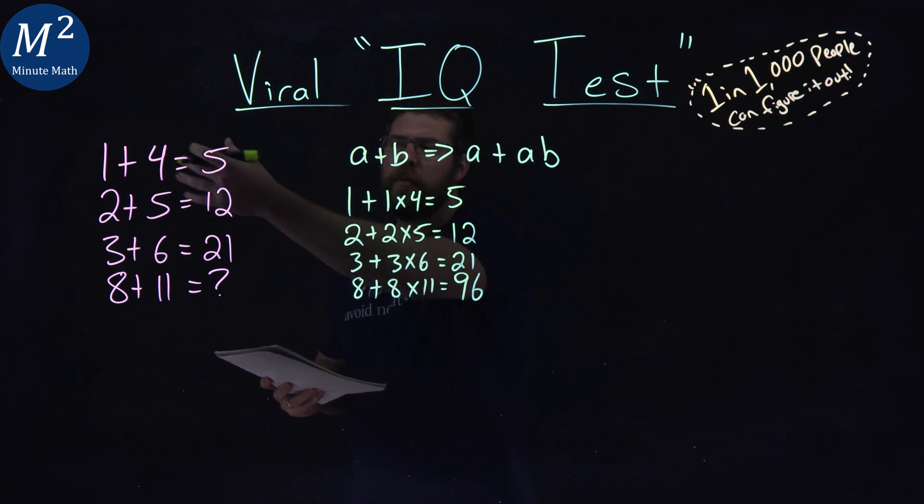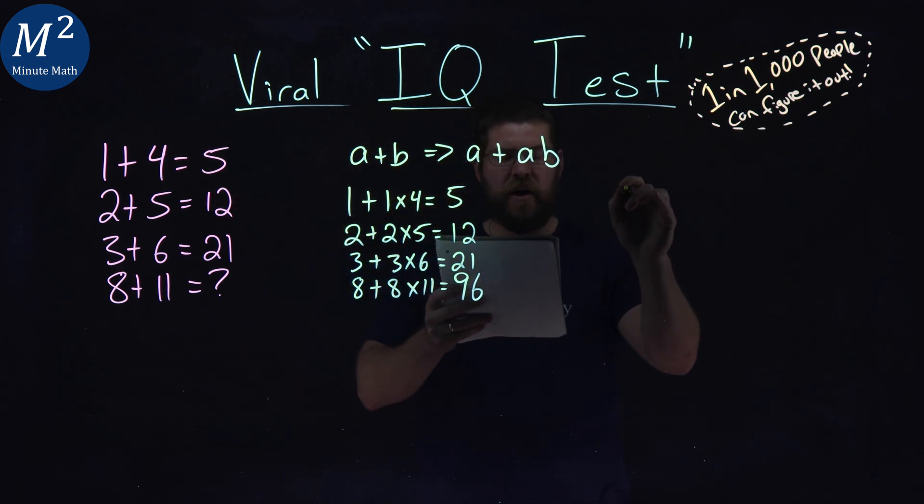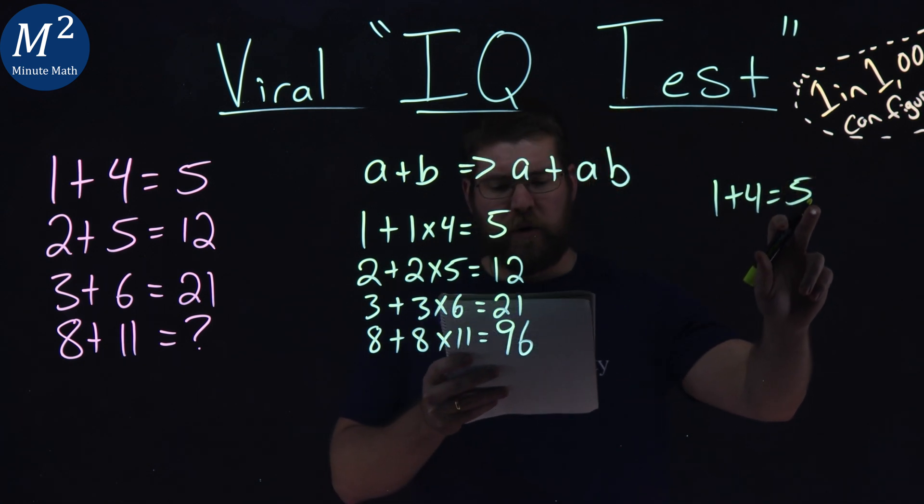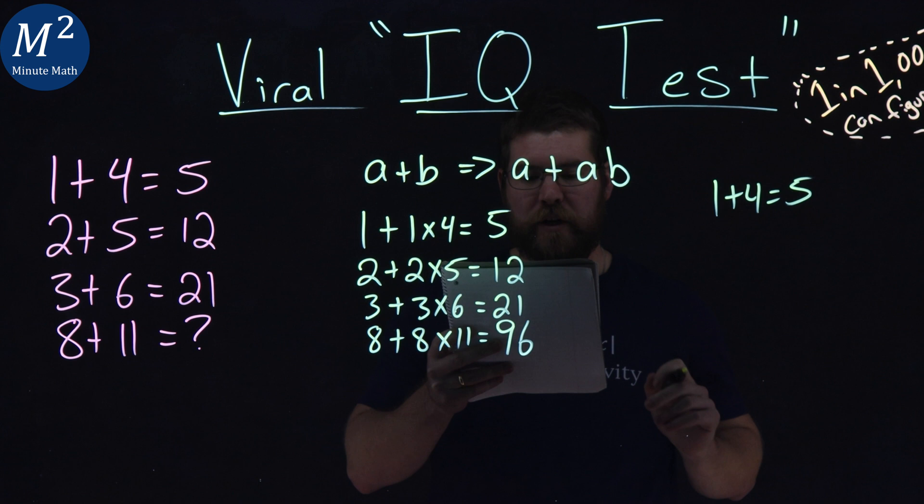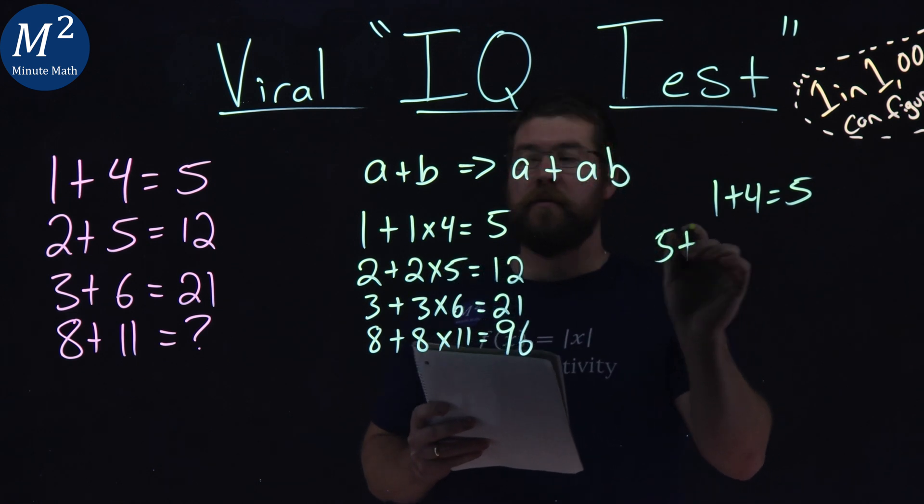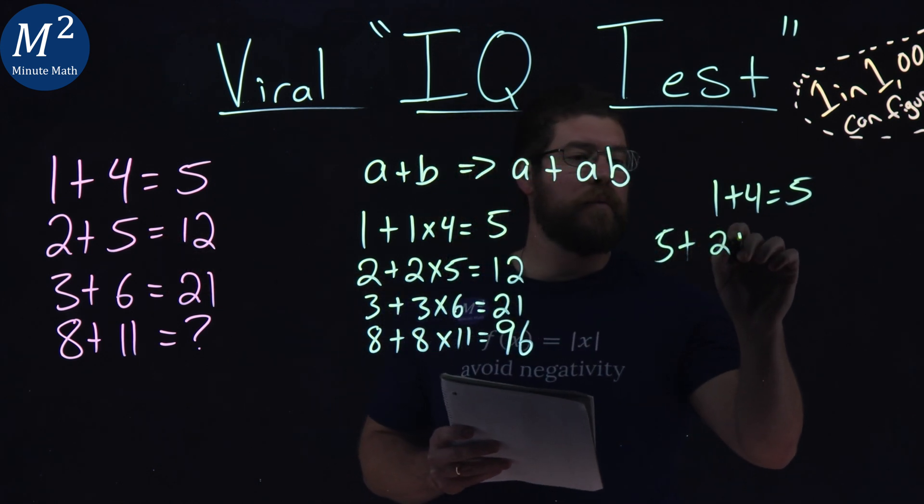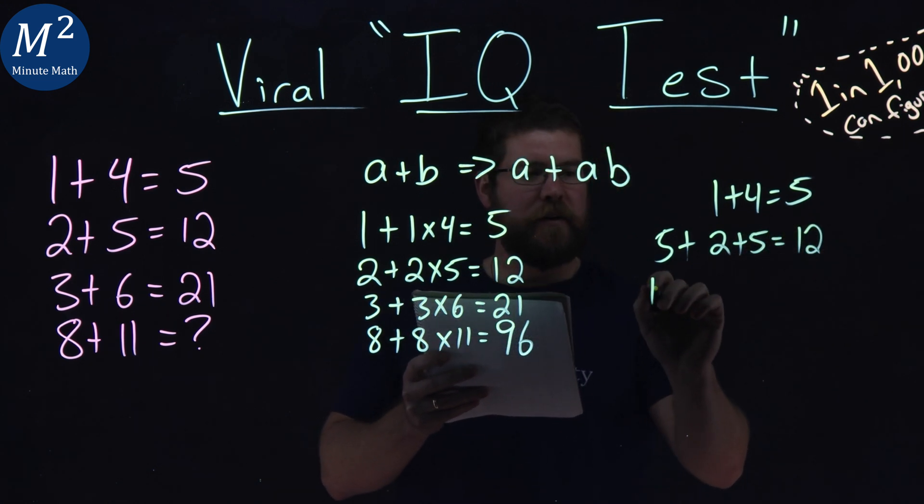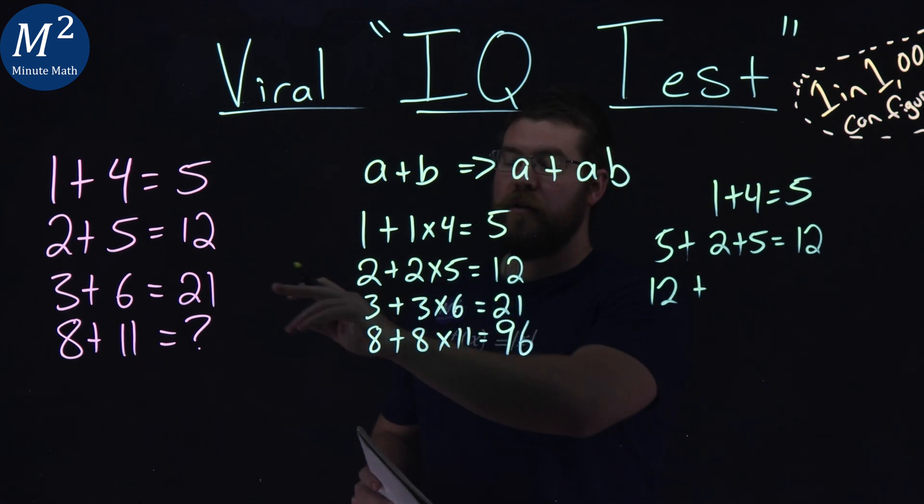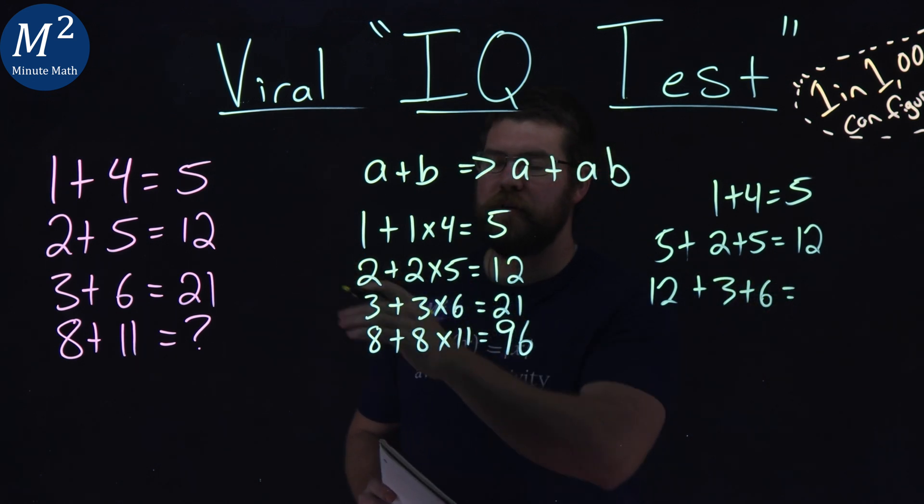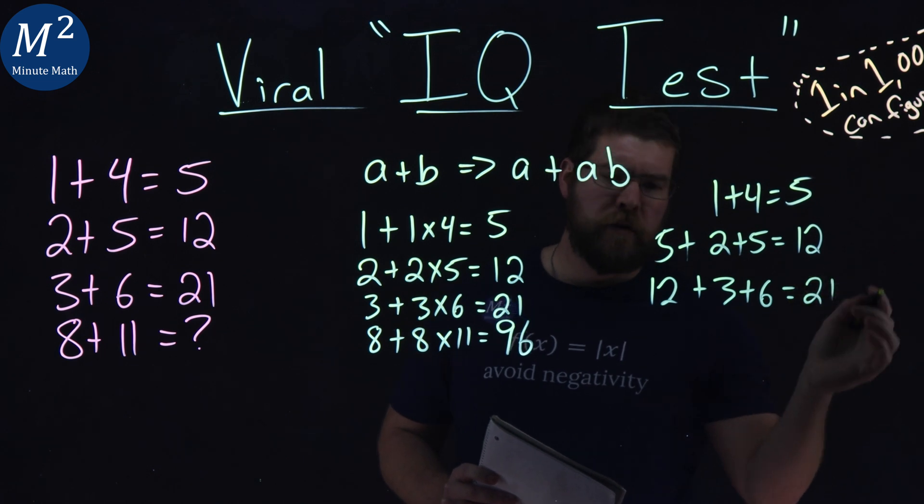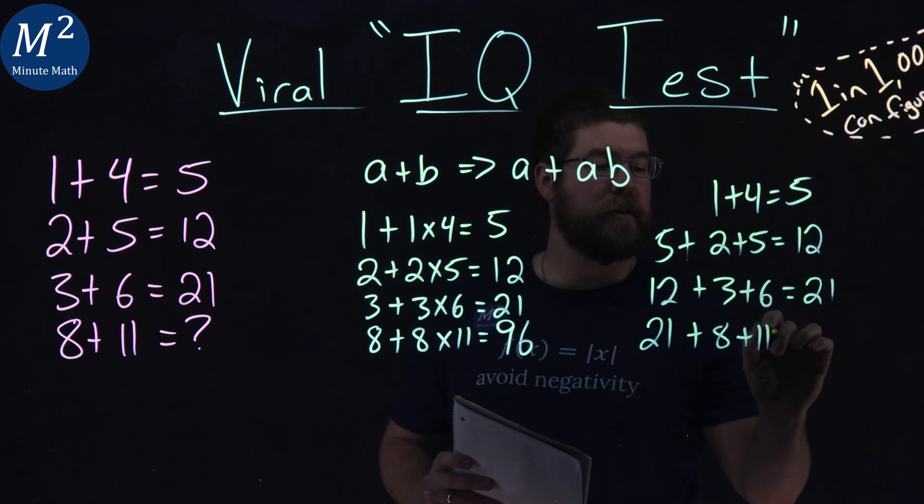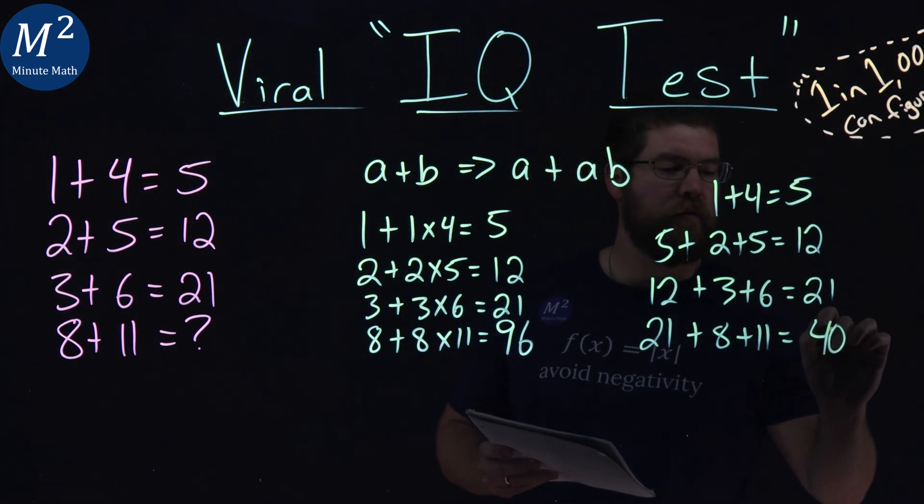They saw or interpreted this IQ question to be 1 plus 4 is equal to 5. We take that total, 5, and add it to the previous problem. So 5 plus, or the next one down, 2 plus 5 gives us the 12. Take that 12, put it down up front here, 12 plus 3 plus 6, which would give us the 21. So then we take that 21, put it out front at 8 plus 11, and we get the answer of 40.